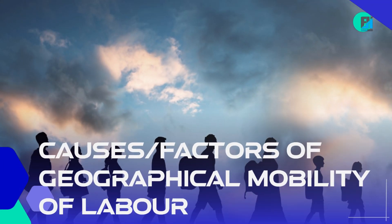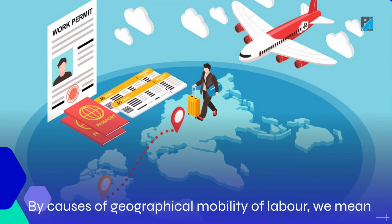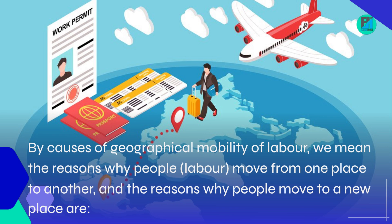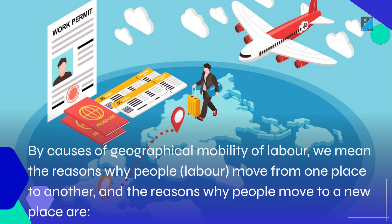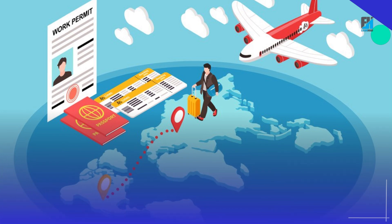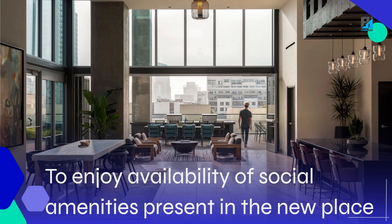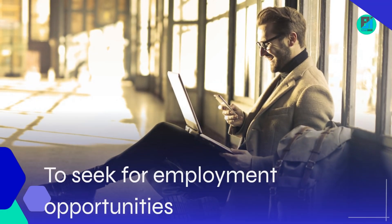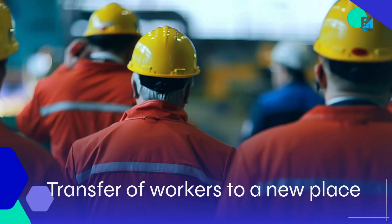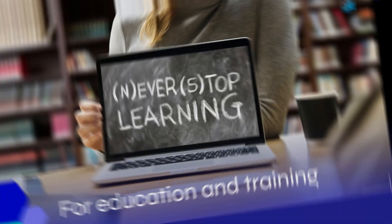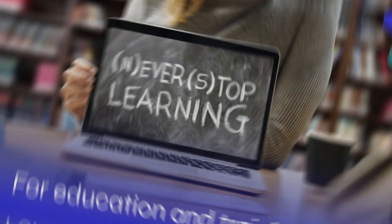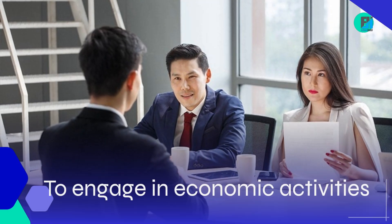Causes or Factors of Geographical Mobility of Labor — we mean the reasons why people, or labor, move from one place to another. The reasons why people move to a new place are: to enjoy availability of social amenities present in the new place; to seek for employment opportunities; transfer of workers to a new place; for education and training; and to engage in economic activities.